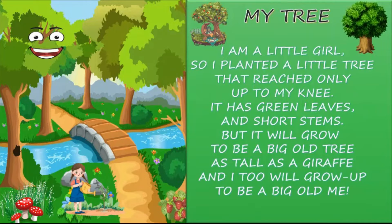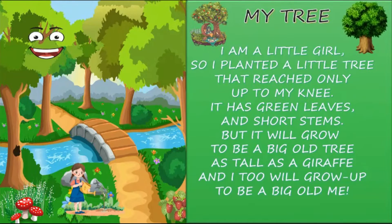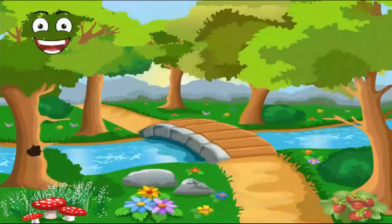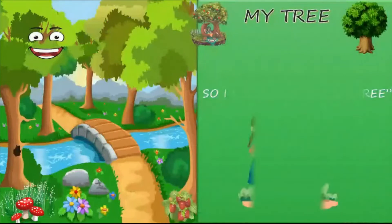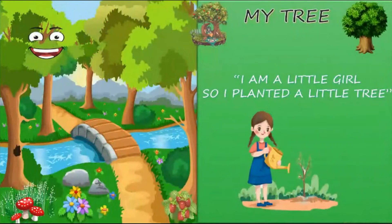A tiny girl is telling us that she has planted a little tree — a plant that has only reached her knee. She says it has green leaves and short stems, but one day it will grow to be a big old tree as tall as a giraffe. She also tells us that she will grow up too and become a big old me. Now let's see the poem line by line.